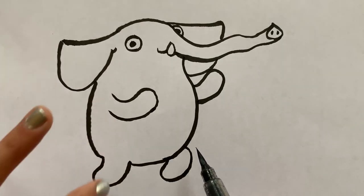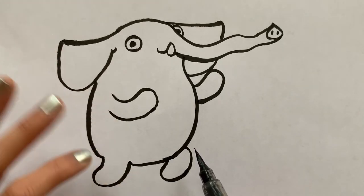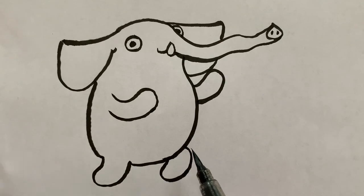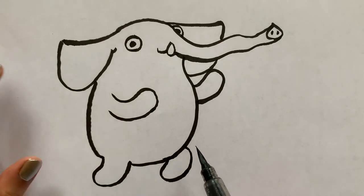Whereas this part, this arm and this leg, they don't have a line in front of them. So it just shows that her body is, that's the part of her body that's closest to us.